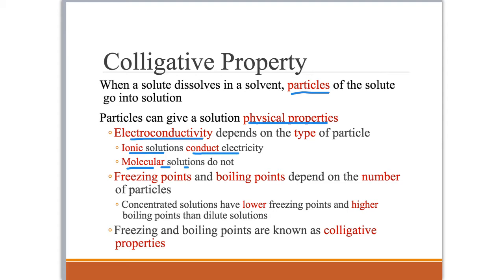Freezing points and boiling points are two other properties that depend on the number of particles, not the type, but the number of particles found in the solution. So concentrated solutions are different than more dilute solutions. Concentrated solutions have a lower freezing point and a higher boiling point than dilute solutions. And these freezing and boiling points, or situations where the number of particles is what changes the property, are known as colligative properties.